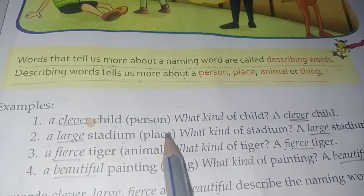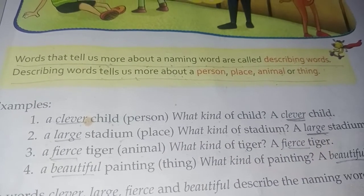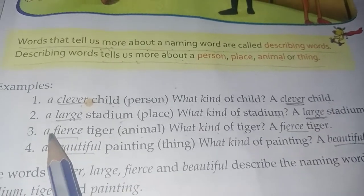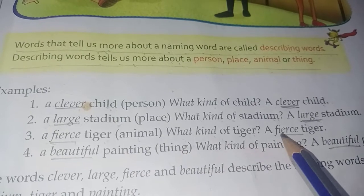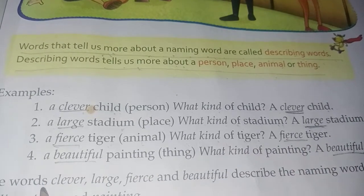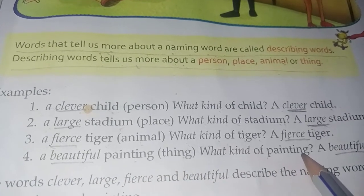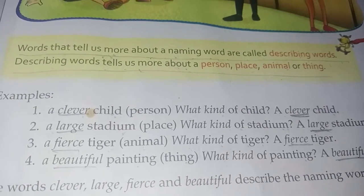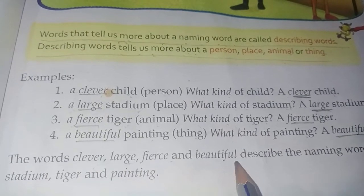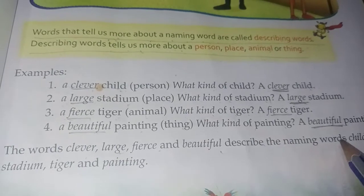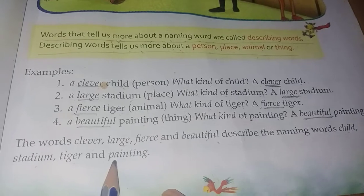A large stadium. Stadium is a place. What kind of stadium? A large stadium. A fierce tiger. Tiger is an animal. What kind of tiger? A fierce tiger. A beautiful painting. Painting is a thing. What kind of painting? A beautiful painting. The words clever, large, fierce and beautiful describe the naming words: child, stadium, tiger and painting.